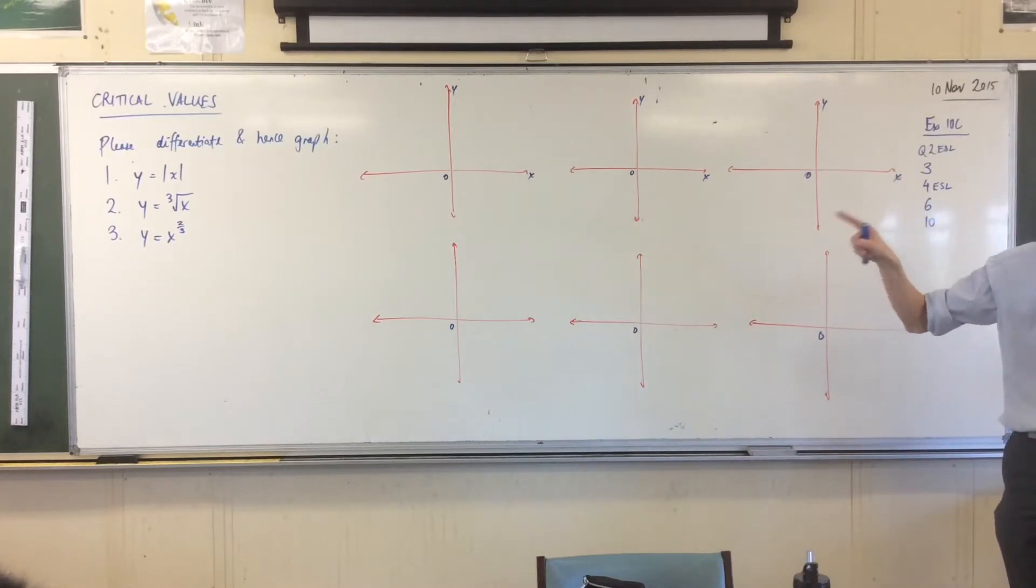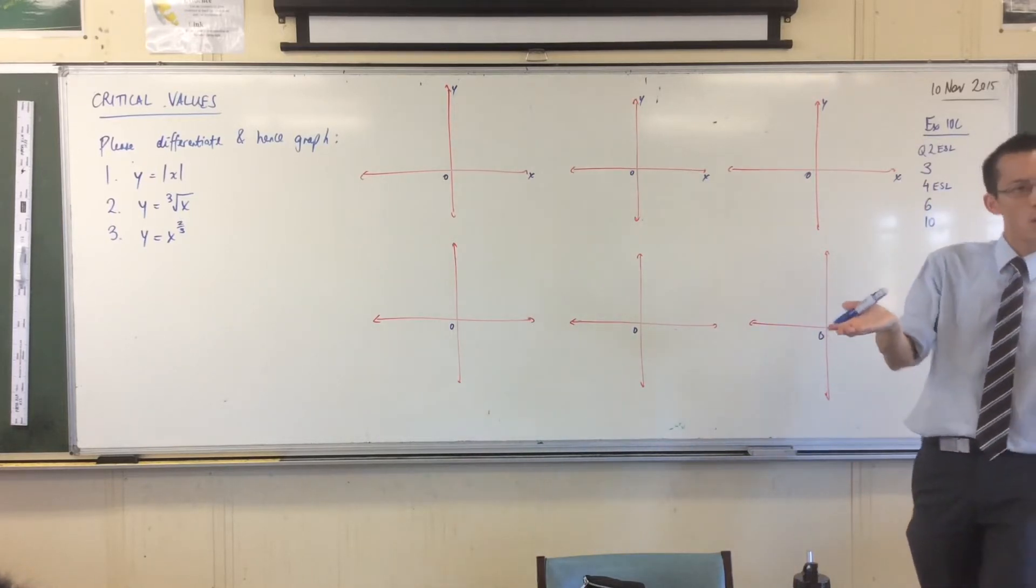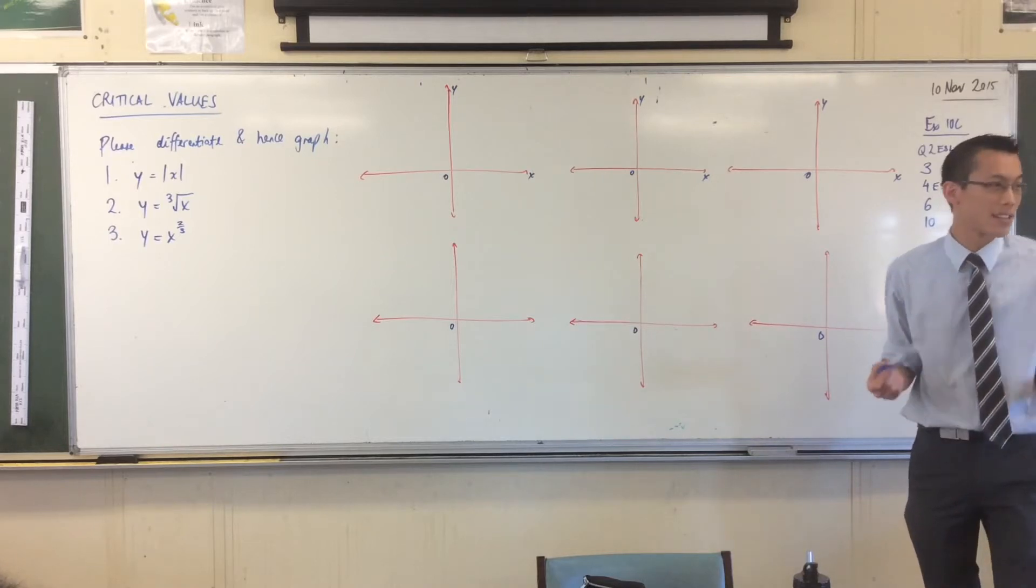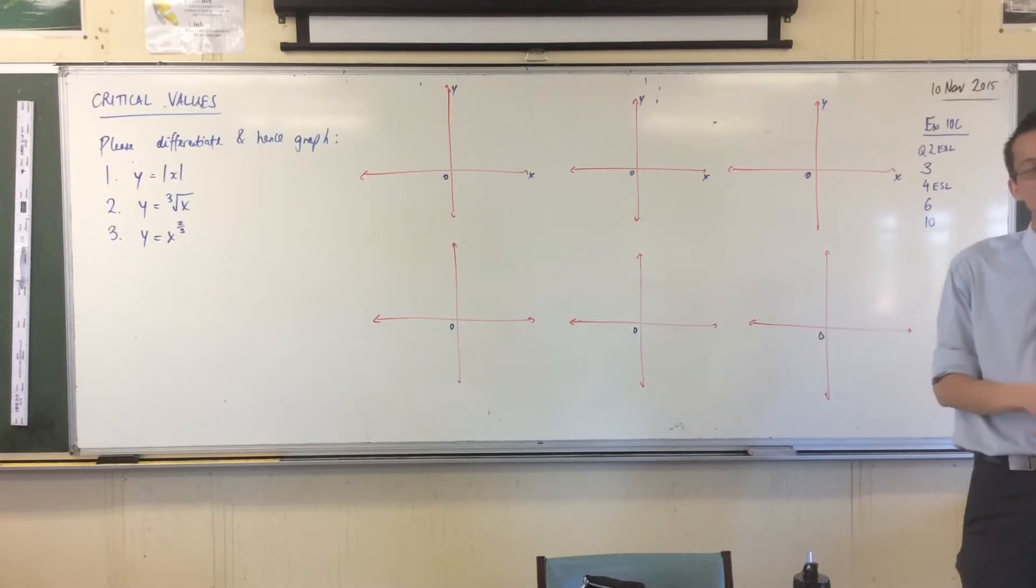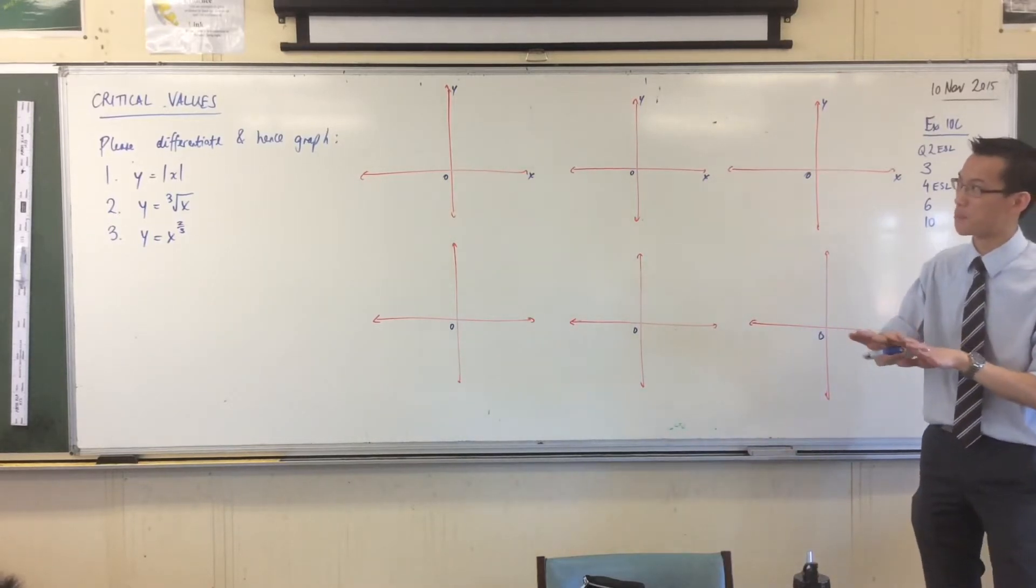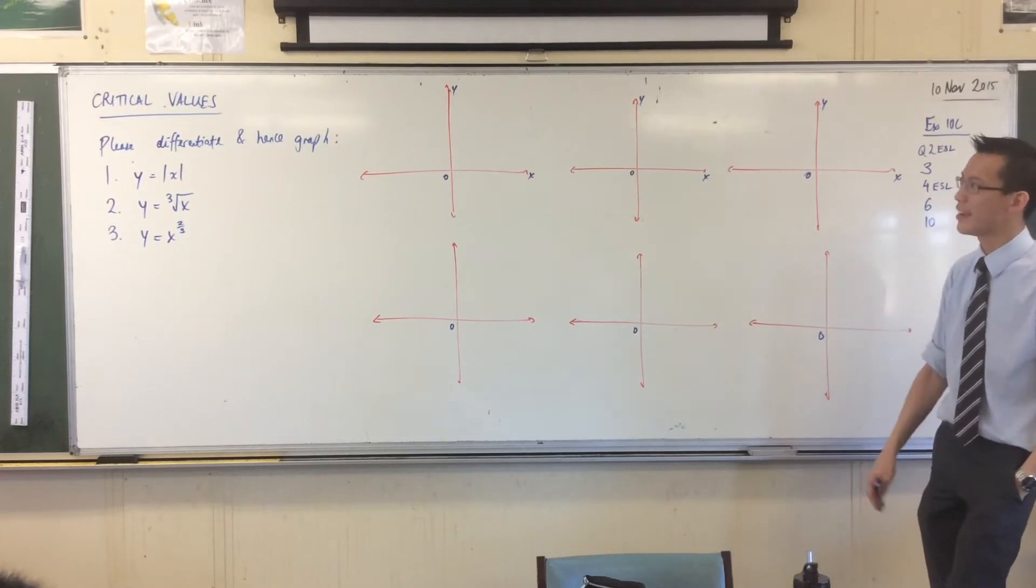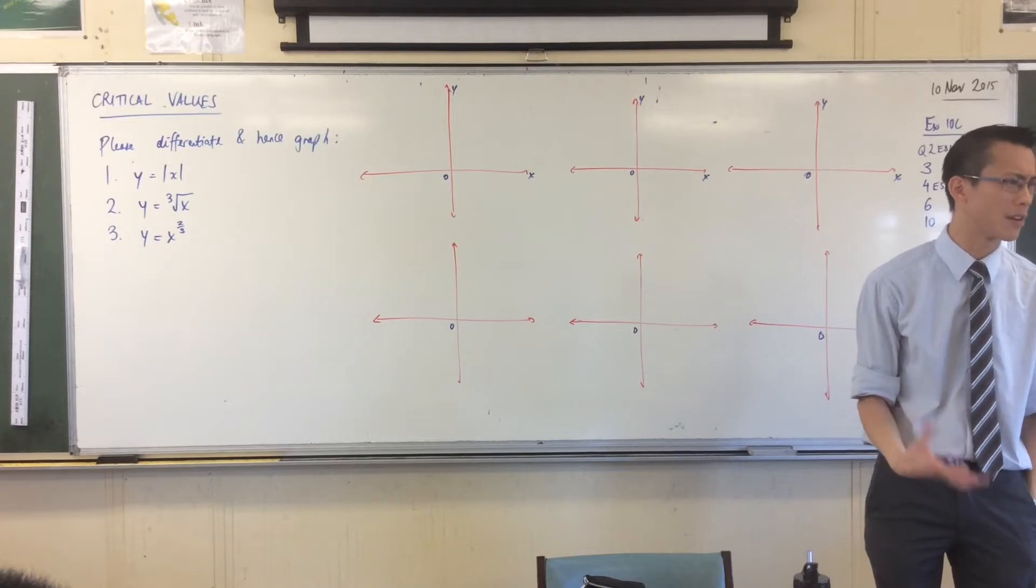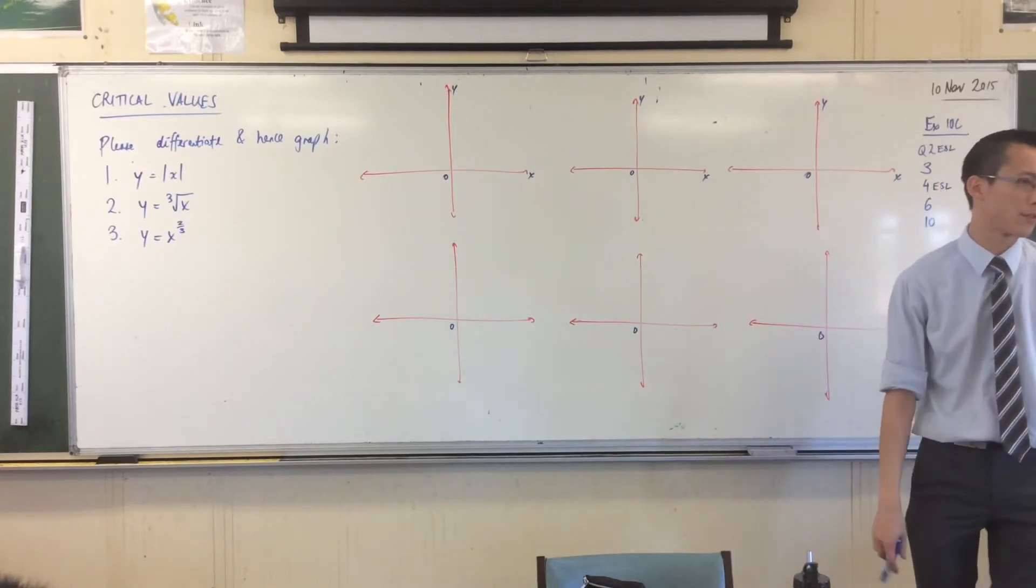Secondly, critical values is just a heading. This is not a great title for what we're looking at today. It's not like the phrase stationary points. When you say stationary points, everyone knows what you're talking about. There's no ambiguity. It's a completely agreed upon term. Not so much when we talk about critical values. If you say critical values to one mathematician versus another, they'll be like, what kind of critical values do you mean?